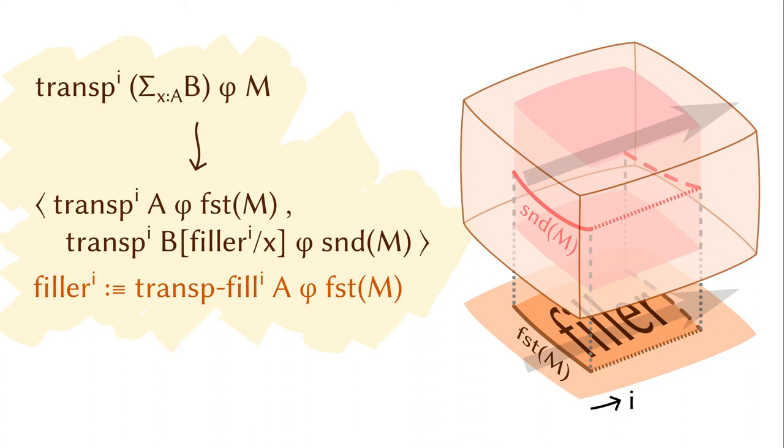Now, the coercion. The coercion of pairs is, again, the pair of coerced components. We still need a square on the ground to coerce the second component. Okay, you might want to pause the video again.